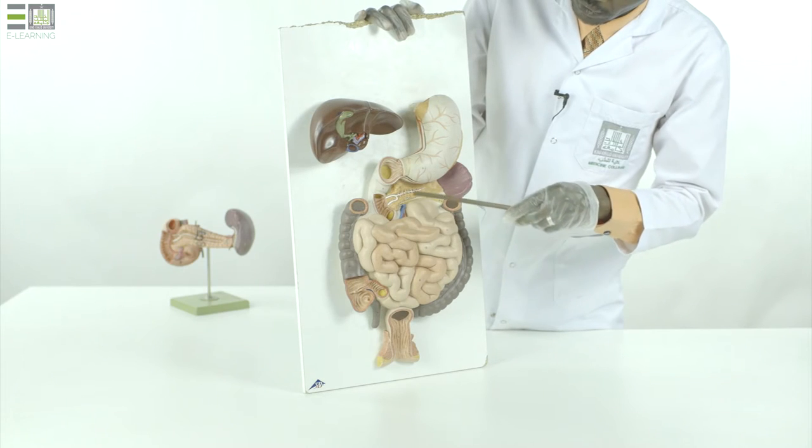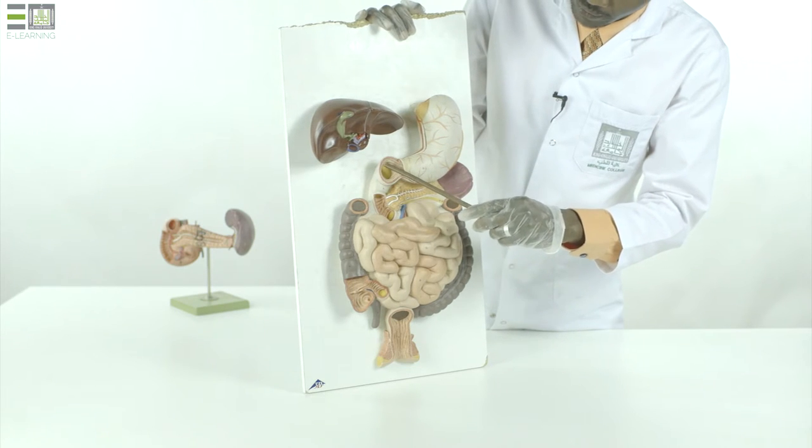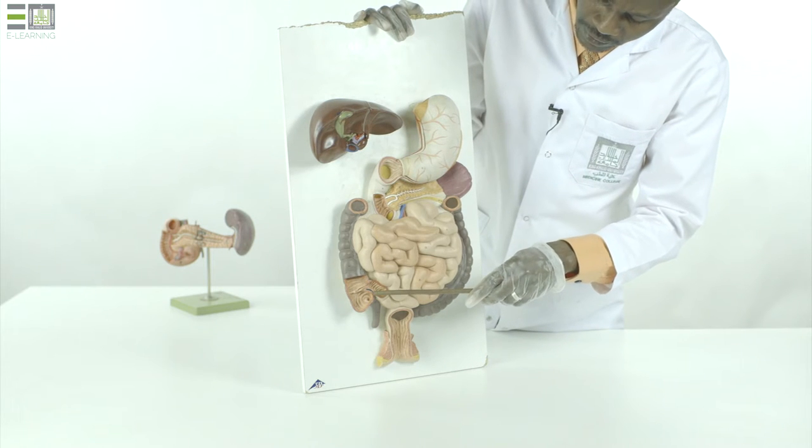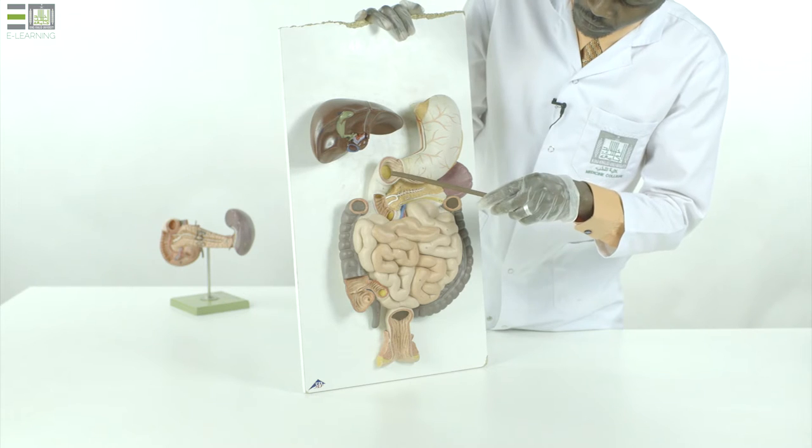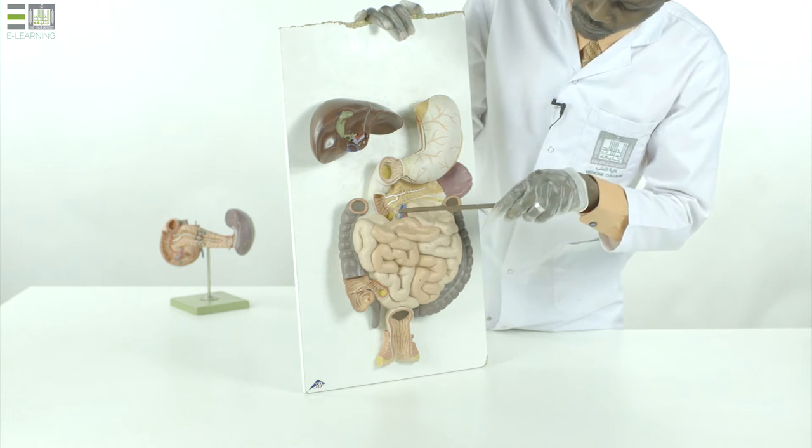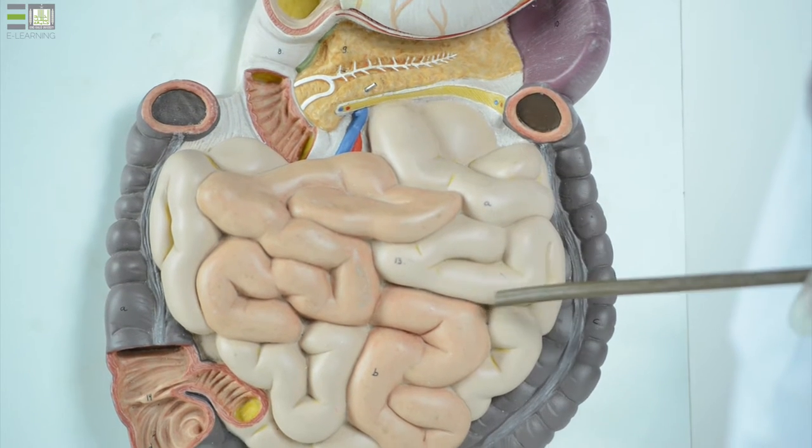The small intestine starts at the gastro-duodenal junction and ends at the ileocecal junction, and is subdivided into three parts: duodenum, jejunum, and ileum.